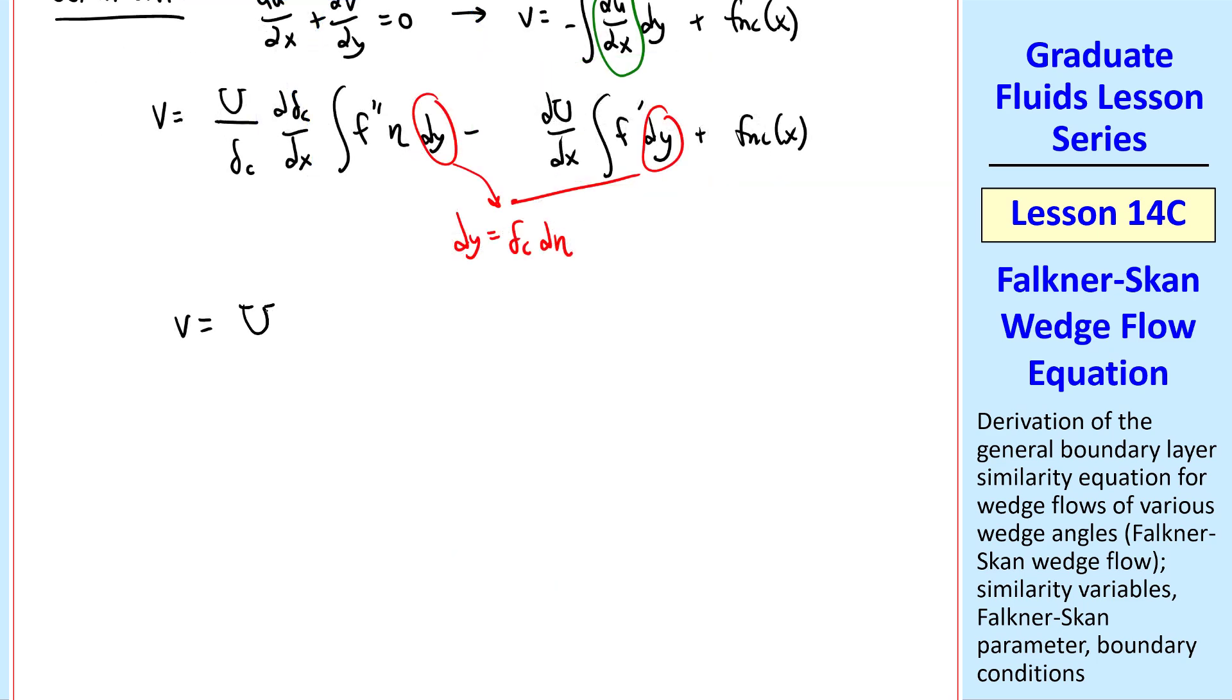So v becomes U d delta c dx, and then the integral is just f double prime eta d eta, and the second integral is f prime d eta. We can integrate by parts like we did with the Blasius solution. If you look back at that lesson, this becomes eta f prime minus f, and this is just f.